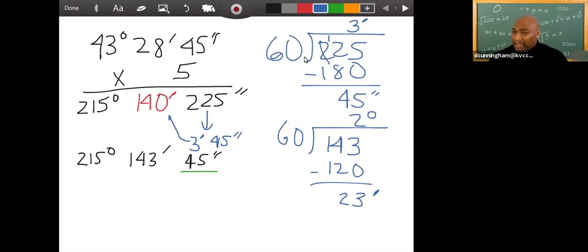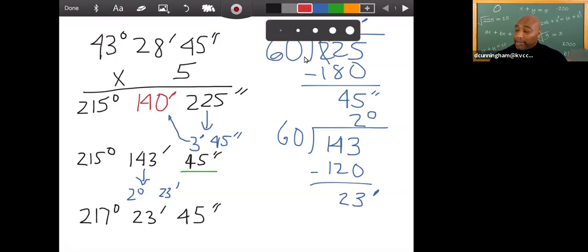So what I'll do is add that two degrees to 215. So notice what it gives me: 217 degrees. In this case, we have 23 minutes and 45 seconds. And actually, that is my answer.